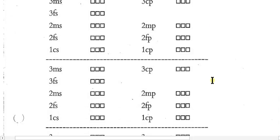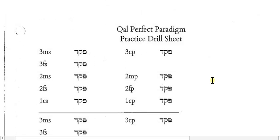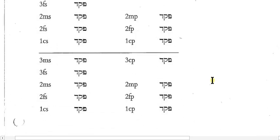You can use these to practice writing the endings. And then there's also a sheet that gives you the root letters of the verb. You can practice writing the vowels inside the three root letters as well as the endings that we're going to be talking about today.